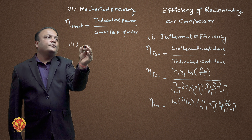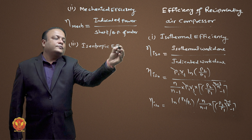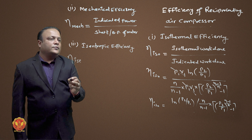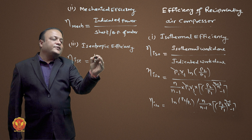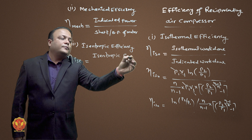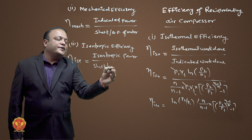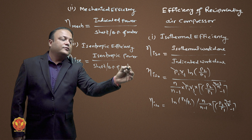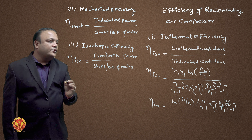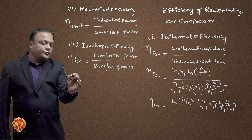The third efficiency is isentropic efficiency. For isentropic efficiency, the ratio is isentropic power to shaft power. In both cases — mechanical and isentropic — shaft power is always greater than either isentropic or indicated power. This is the third efficiency.